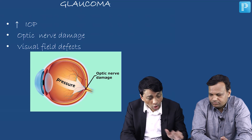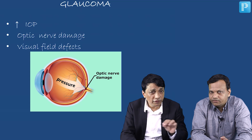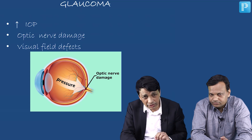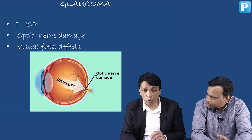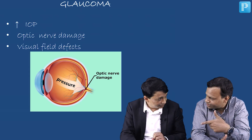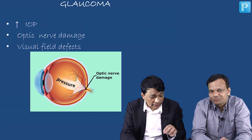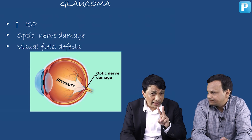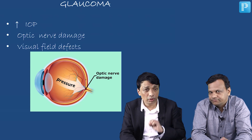You may have a normal pressure — I said it has to be more than 21, but it could be around 15 — and yet if you have optic nerve damage and visual field effects, we will call it glaucoma. This is called normal tension glaucoma. For the diagnosis we need two out of three.